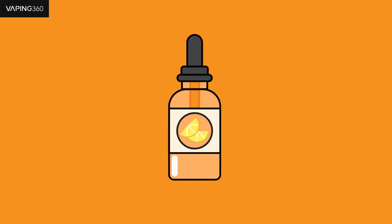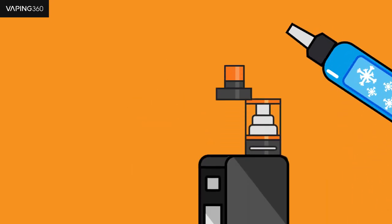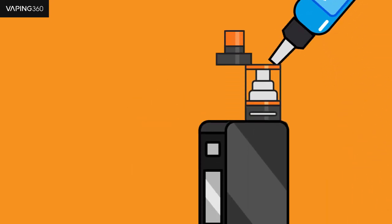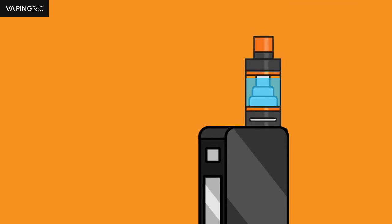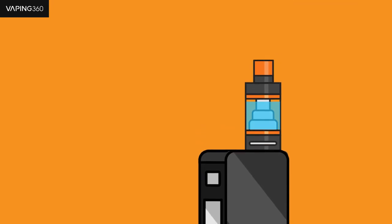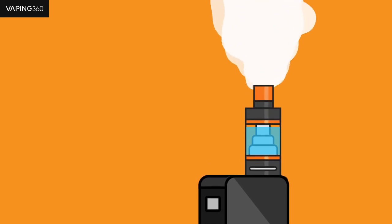So how does e-liquid become a vapor? That's simple. E-liquid is placed inside a vape device such as a tank. The user will then use the vape device to heat up the e-liquid. Once heated up, this produces the vapor that someone can inhale.